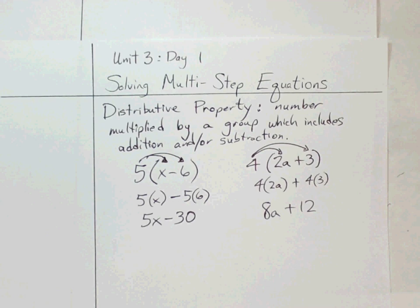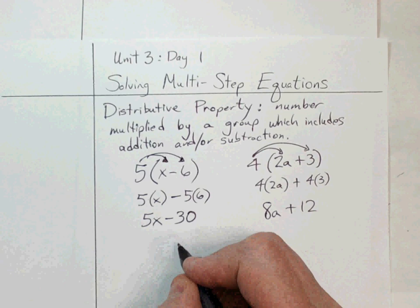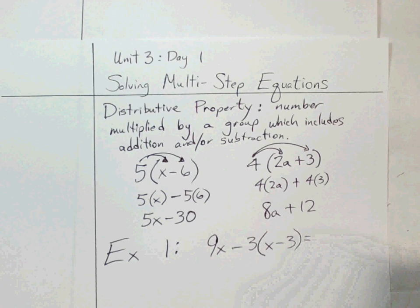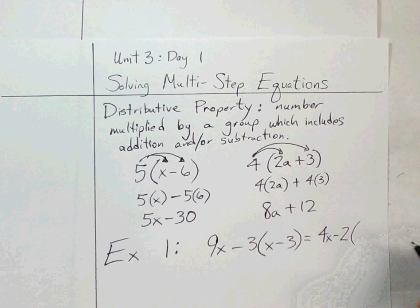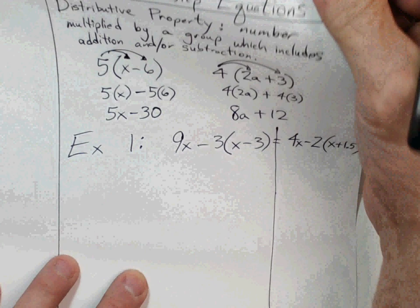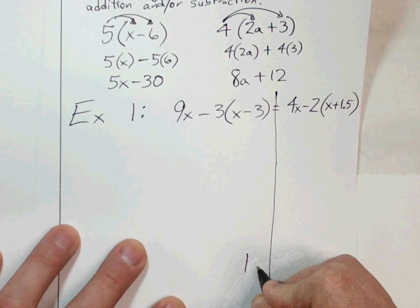Let's dive in and do an example. I'll do one side of the problem, then EdPuzzle will pause and you'll try the other side. Example one: 9x minus 3 times the group (x minus 3) equals 4x minus 2 times the group (x plus 1.5). What we ultimately want is x by itself — we want x to have a coefficient of one.